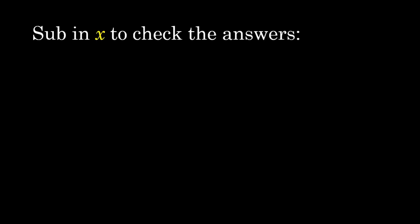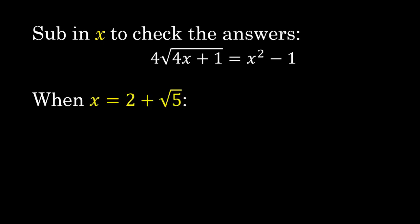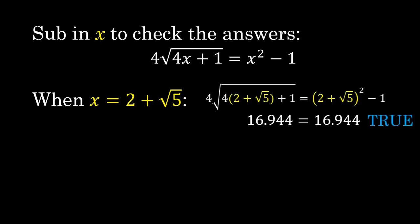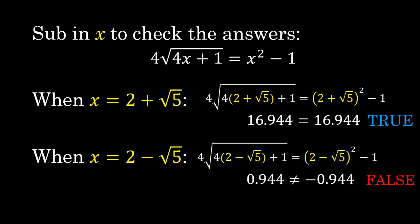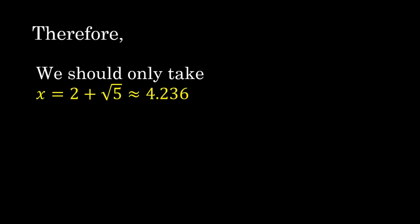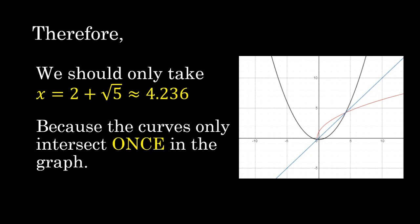I forgot something very important — we should always substitute the value of x back into the equation to check our answer. When x equals 2 plus square root of 5, we get a true equation, so that is a valid solution. When x equals 2 minus square root of 5, we get a false equation, so 2 minus square root of 5 is not a solution. Therefore x equals 2 plus square root of 5, which is approximately 4.236, because the curve only intersects once in the graph — remember, f inverse is a square root function.